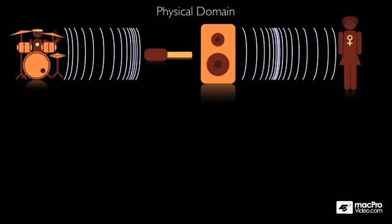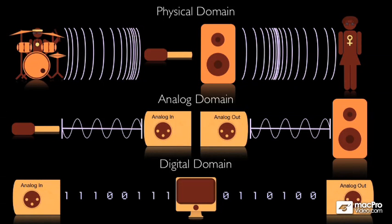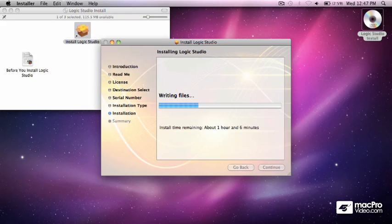So in each of these domains — the physical domain, the analogue domain, and the digital domain — as well as taking on different forms, the audio signal also travels at different speeds. And what this means is that each domain is going to contribute differently to our system's overall latency. So while Logic keeps installing, let's take a closer look at each individual domain to see if we can get a handle on where and why latency occurs.